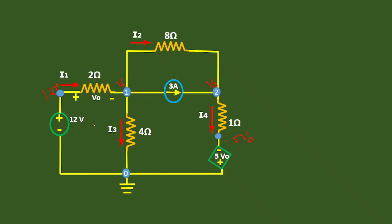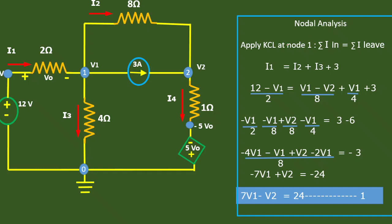With these details, let's analyze the circuit. We are going to follow nodal analysis, applying KCL at node 1. KCL is Kirchhoff's Current Law, which states that the summation of incoming current is equal to the summation of leaving current at a particular node.